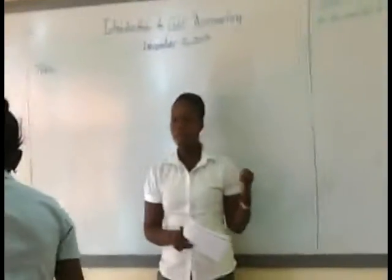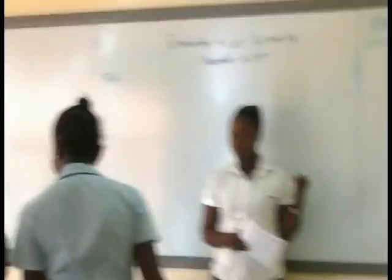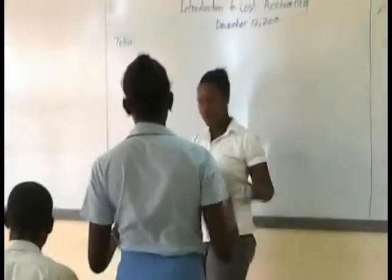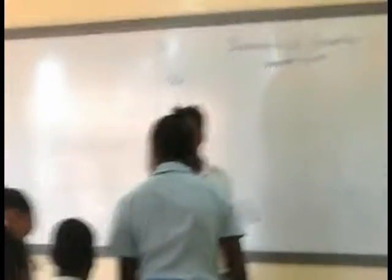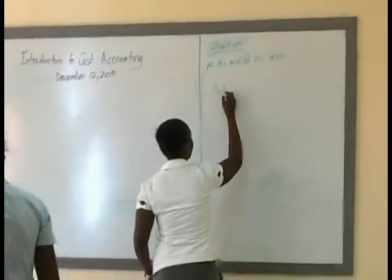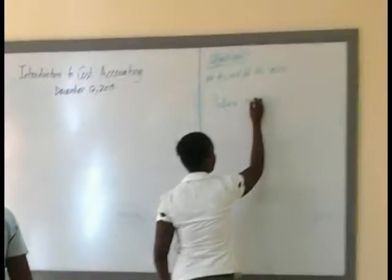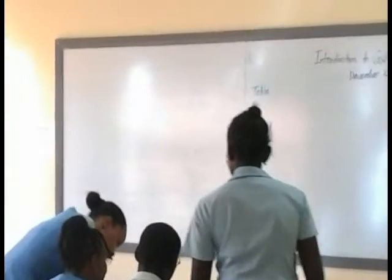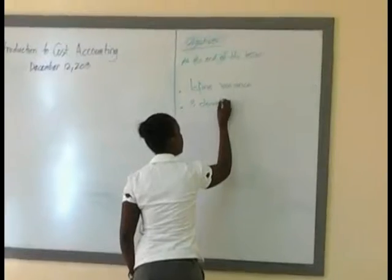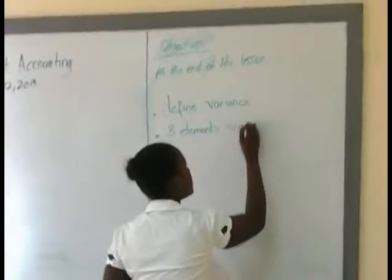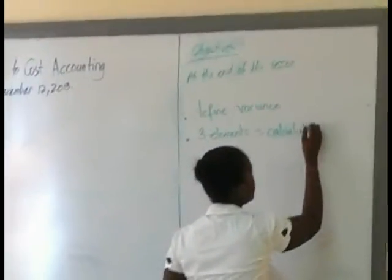Alright, let's hear the first. In the last class, the first thing is standard costing. Next, something about variance — we're going to define variance. Then we select the three elements of variance and calculate and interpret these elements.